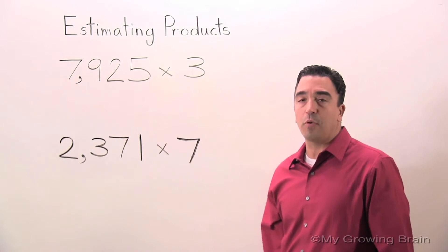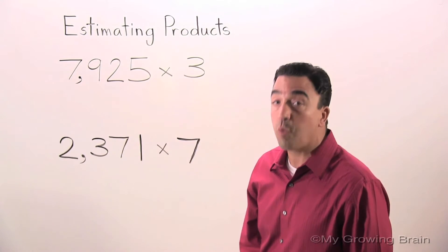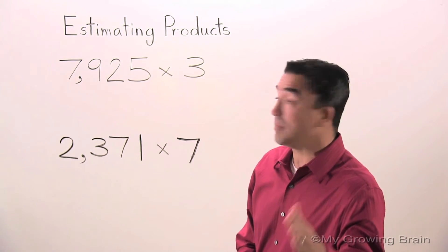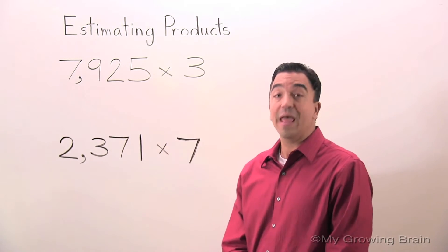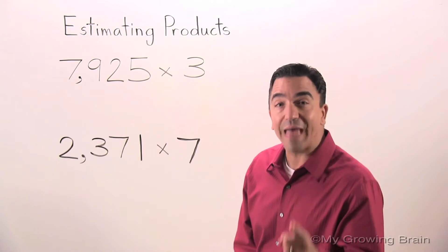I have two problems on the board. I'm going to start with 7,925 times 3. I want to find an estimate for this problem. An estimate is an answer that is close to the actual answer.